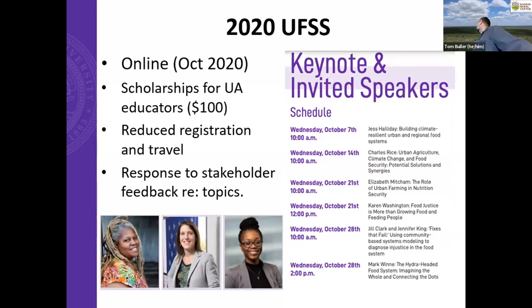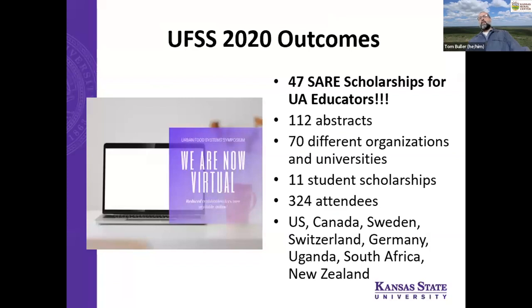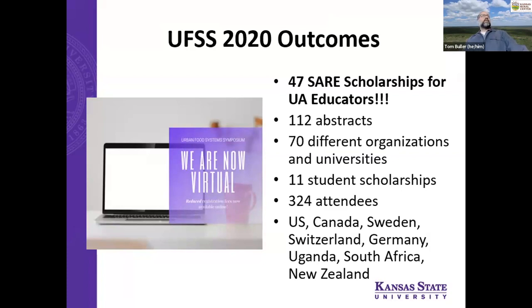We ended up with a slate of both keynote and invited speakers that ended up being fairly compelling: Jess Halliday, Chuck Rice from Kansas State, Elizabeth Mitchum, Karen Washington, Joe Clark, Jennifer King, and Mark Winnie. With the 2020 Urban Food System Symposium, we were able to provide 47 scholarships to our urban ag educators. We had 112 abstracts from 70 different organizations, gave an additional 11 scholarships to students, and wound up with 324 attendees coming from as far as New Zealand, South Africa, and Switzerland — a much more international conference as a result of going virtual.